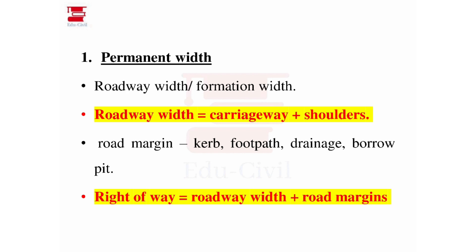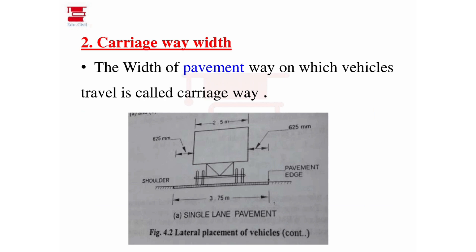What is the carriageway? The carriageway is the width of pavement on which vehicles travel and traffic is carried out. This is not the shoulder — this is the carriageway. The carriageway width for a single-lane pavement is 2.5m per lane, with 625mm margins, giving a total of 3.75m.